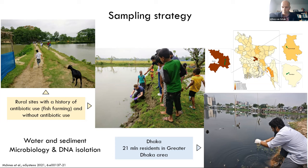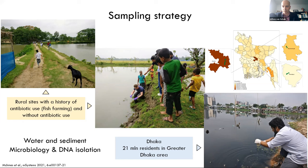In addition to that, we also sampled sites in Dhaka, which you can see in the right corner. Dhaka is one of the largest cities on the planet, with 21 million people living there, and it's a city with large differences between rich and poor. Most parts of Bangladesh are just about sea level with lots of rivers, lakes, and water bodies even in a city the size of Dhaka. We sampled these different lakes in Dhaka as well — including a site very close to one of the slums, where human waste basically ends up in this surface water without any treatment.